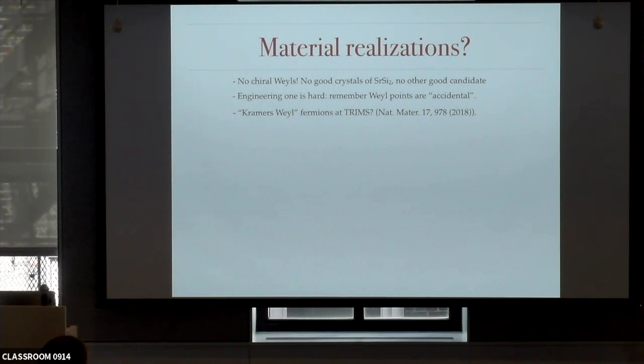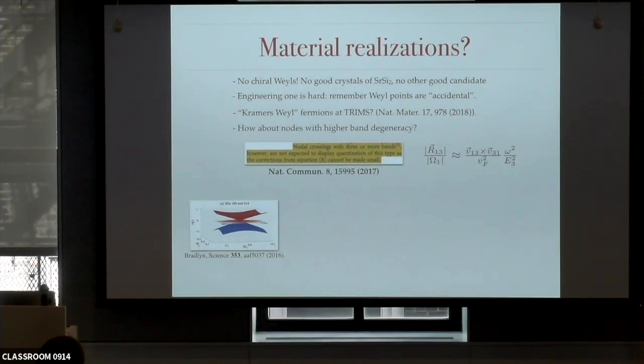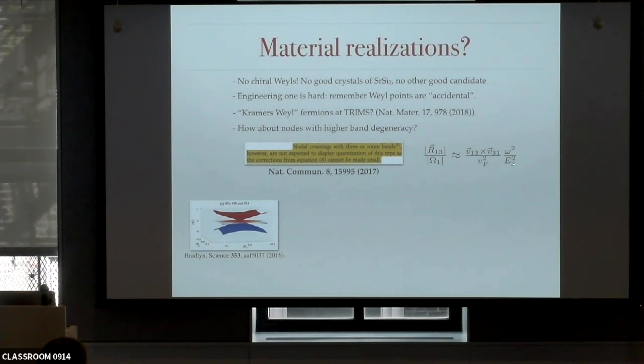There was another option when we were writing the paper: these higher-order nodal crossings — multifolds — which have more than two bands. We actually had a referee asking whether this effect works for multifolds. If you read the paper, you'll find we said no. Essentially, if you take this correction from the third band at energy E_3, that band is crossing the node, so E_3 is zero. The correction blows up and doesn't make sense — this will never be quantized at one. So that's what I answered to the referee and moved on, and I tried to design a Weyl semimetal in some other way.